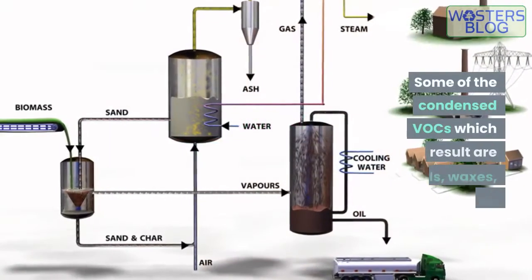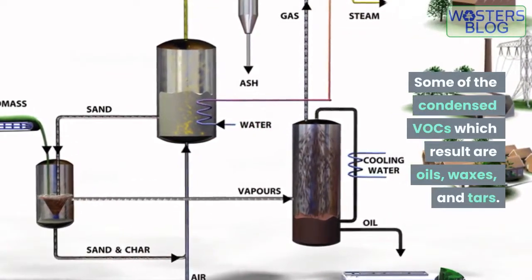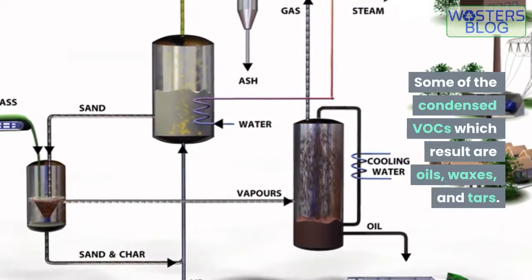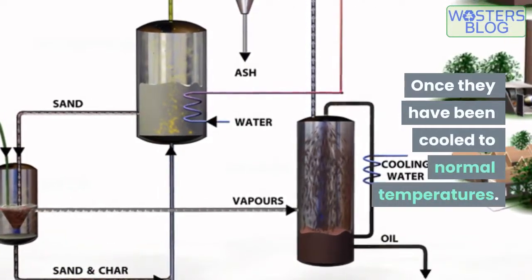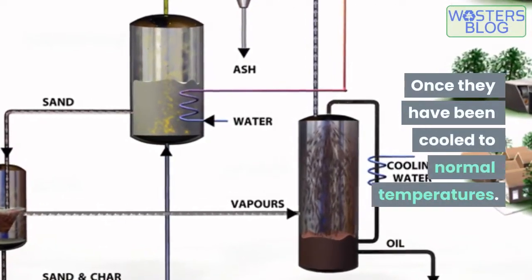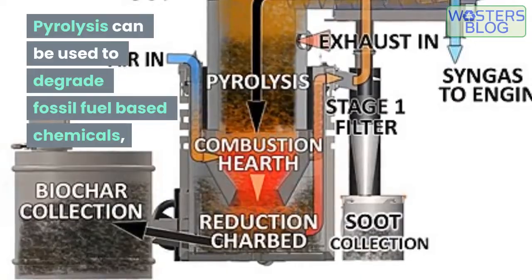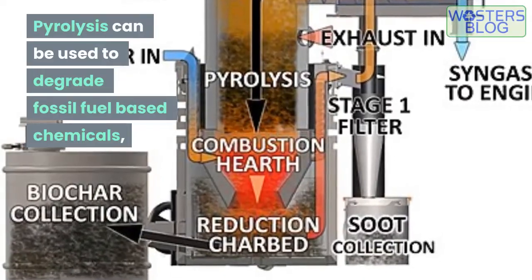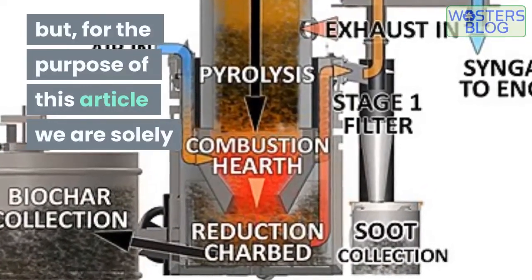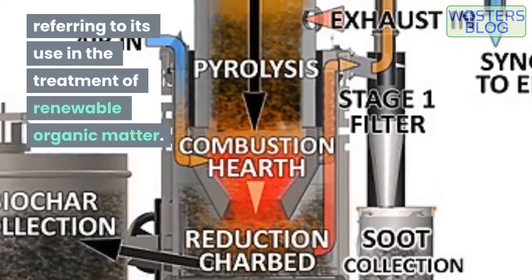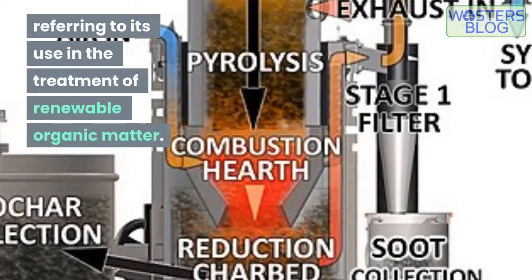Some of the condensed VOCs which result are oils, waxes, and tars, once they have been cooled to normal temperatures. Pyrolysis can be used to degrade fossil fuel-based chemicals, but for the purpose of this article we are solely referring to its use in the treatment of renewable organic matter.